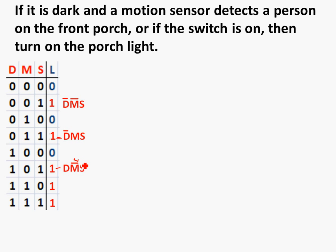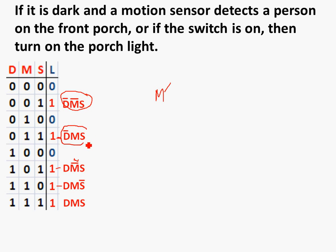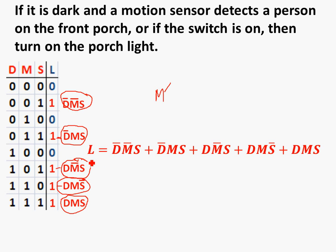For D is 1, M is 1, S is 0, we write: D, M, not-S. And finally, when D, M, and S are all 1, we write: D, M, S. The porch light will come on if the first condition is met, OR the second, OR the third, OR the fourth, OR the fifth. So the expression for L is: (not-D · not-M · S) OR (not-D · M · S) OR (D · not-M · S) OR (D · M · not-S) OR (D · M · S).